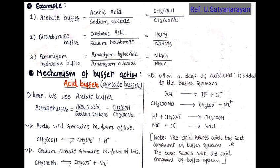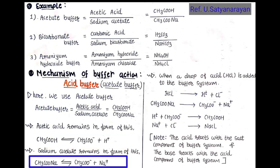We are talking about mechanism of buffer action — meaning, testing on a buffer solution. As described in the definition, a buffer solution resists change in pH. Here we use acid buffer solution, the acetate buffer. We know that the weak acid and its salt are present in remaining form, meaning they can combine or dissociate. CH3COOH dissociates into CH3COO- plus H+; same process in the salt CH3COONa dissociates into CH3COO- plus Na+.